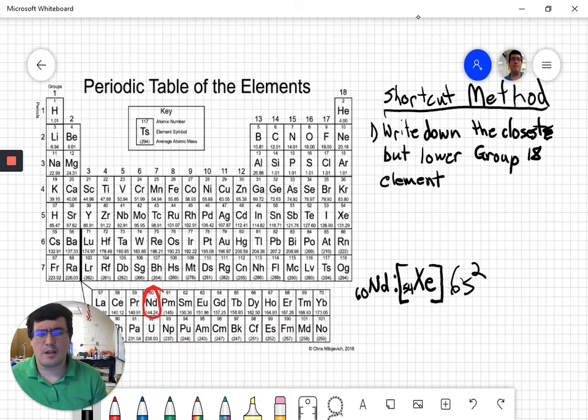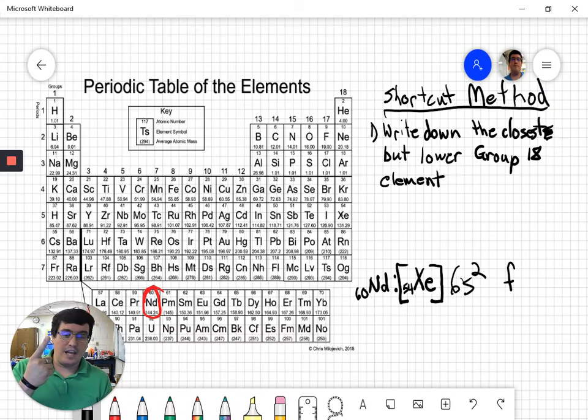After 56 comes what element? 57. 57 is lanthanum. Good old lanthanum here. So lanthanum is now in, which block is this one down here? This is the, you got it. This is the F block, all right? So we need to know what element goes in front of F. I'm going to show you this one down here in the thing.